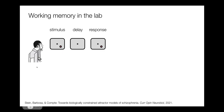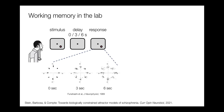This is a typical task that people are studying for these computational models. A subject sees a stimulus on a screen. In this case, the stimulus value of importance is the position, which is an angular position on the screen. Then the subject has to remember this position throughout a delay of several seconds. Finally, there's a response given either by an eye movement or by a cursor movement of a mouse.